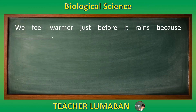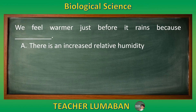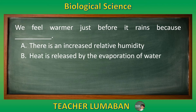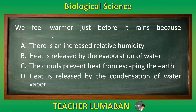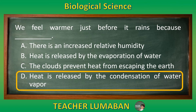We feel warmer just before it rains because blank. Letter A: there is increased relative humidity. Letter B: heat is released by the evaporation of water. Letter C: the clouds prevent heat from escaping the earth. Letter D: heat is released by the condensation of water vapor. Choose the suitable answer based on the given choices in 5 seconds. 5, 4, 3, 2, 1.